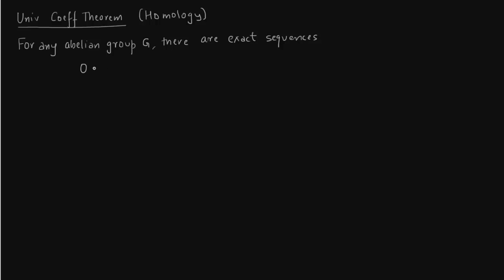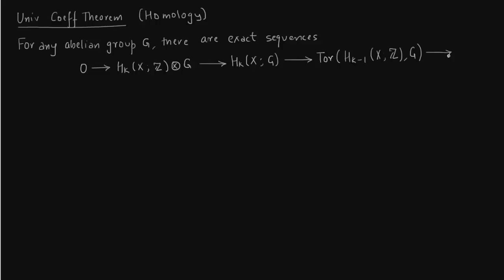For any abelian group G, there is an exact sequence. You start with the homology group computed in integers, tensor it with group G, and then you get the homology group you wanted — for example, in Z2 instead of Z. The third term is the Tor group. Tor is essentially a functor. We will not go into the details of what Tor is; we will just write down the properties of Tor and tensor product. The above sequence splits as follows.